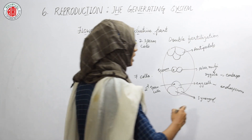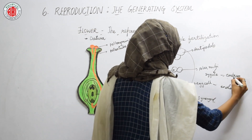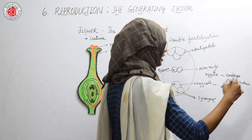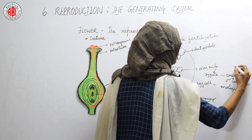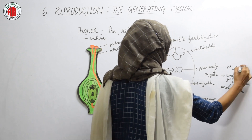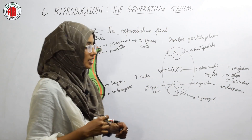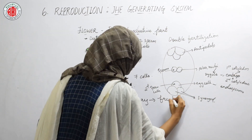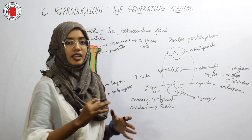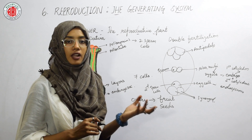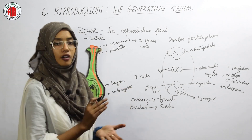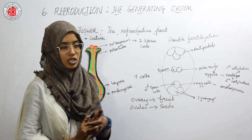In dicot plants, the embryo shows the presence of two cotyledons, while in monocots the embryo shows the presence of one cotyledon. After fertilization, the ovary turns into a fruit and the ovule becomes a seed. The remaining parts of the flower fall off. In this way, sexual reproduction takes place in plants.